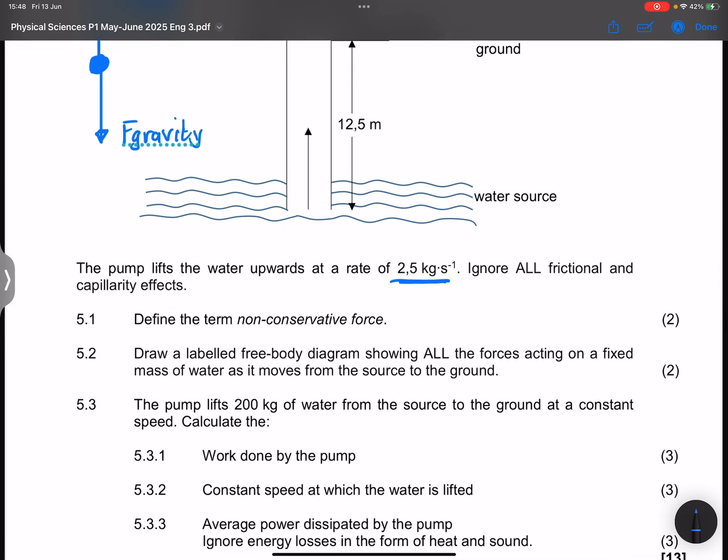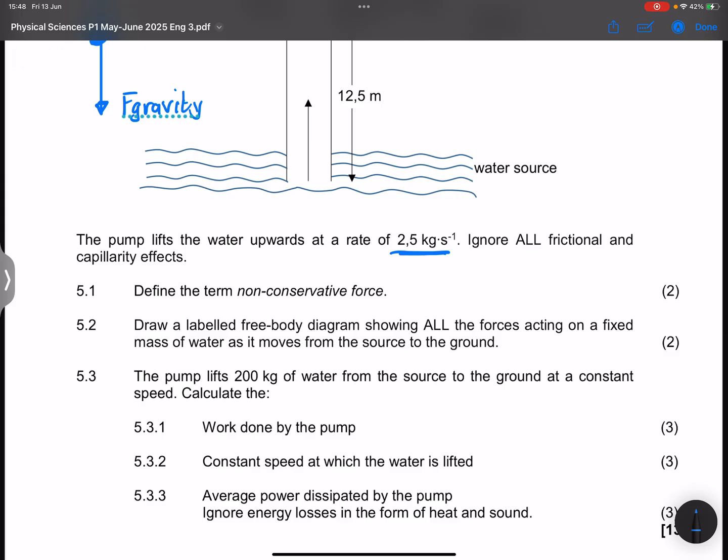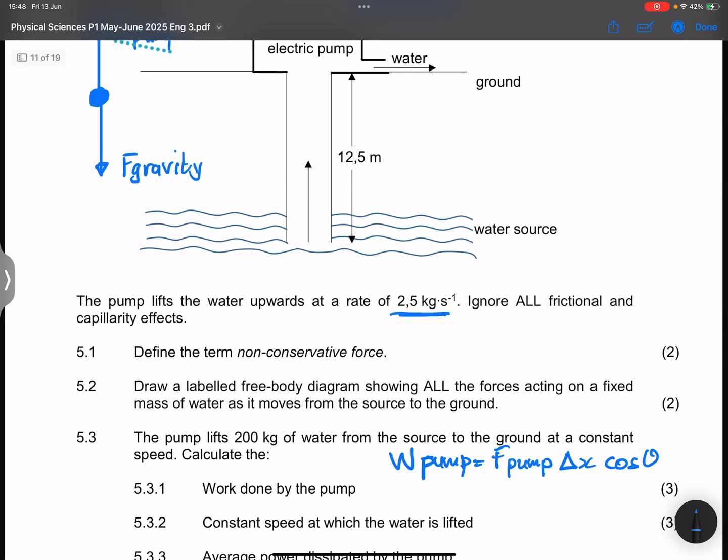The next question says the pump lifts 200 kilograms of water from the source to the ground at a constant speed. Calculate the work done by the pump. Now note the work done by the pump in this case will be the force that's exerted by the pump multiplied by delta X, the cosine of angle theta. So that's force times the displacement there.